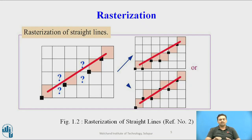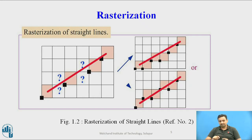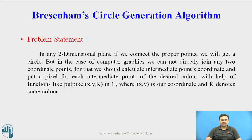Rasterization is the process of moving horizontally along a scan line and visiting multiple pixels. Both pixels on that line should be marked, as you can see from the two graphs shown — the line is the same, but the pixels marked are different based on rasterization. The problem statement is that in the two-dimensional plane, you have to connect the proper points to get the actual circle.